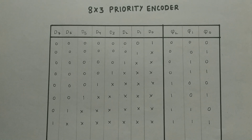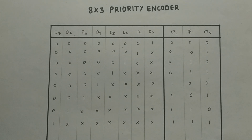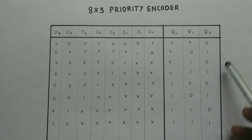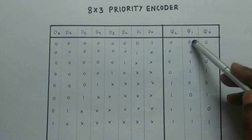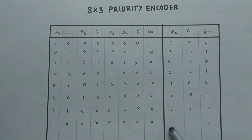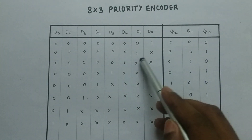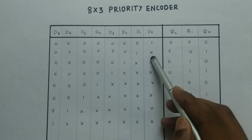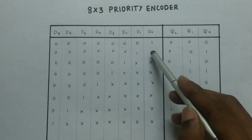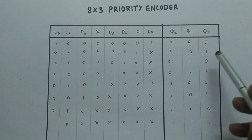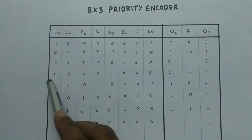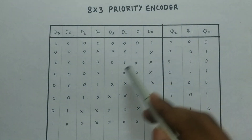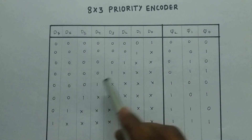As you can see, when D0 is high then we are going to get the encoded value as 0, 0, 0. And when 1 and 0 are high, or don't-care value, then we are going to get 0, 0, 1. Similarly, we are going to have the MSB bit priority.